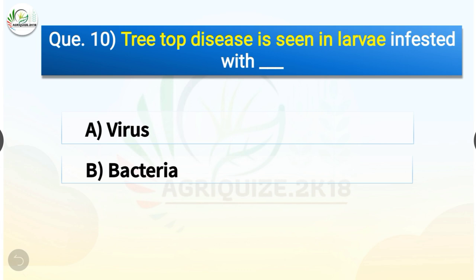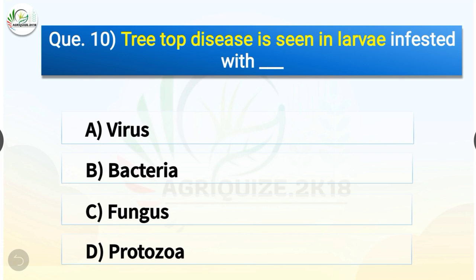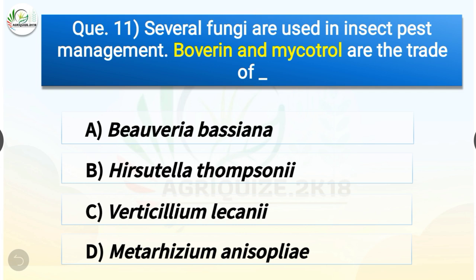Question number ten: treetop disease is seen in larvae infested with — options are virus, bacteria, fungus, or protozoa. The correct answer is option A, virus. Question number eleven: several fungi are used in insect pest management. Boverin and Mycotrol are the trade names of — options are Beauveria bassiana, Hirsutella thompsonii, Verticillium lecanii, or Metarhizium anisopliae. The correct answer is option A, Beauveria bassiana.